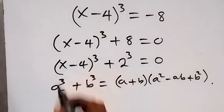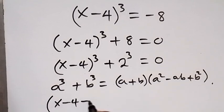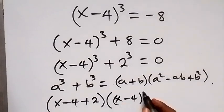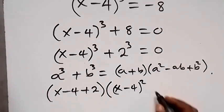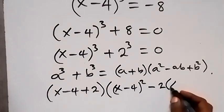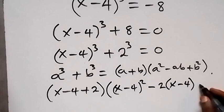So when we apply this here, we express a as x minus 4 and b as 2. We are going to have a plus b, that's x minus 4 plus 2, then multiply by a squared, that's x minus 4 squared, then minus ab, that's minus 2 times x minus 4, then plus b squared, that's plus 2 squared.